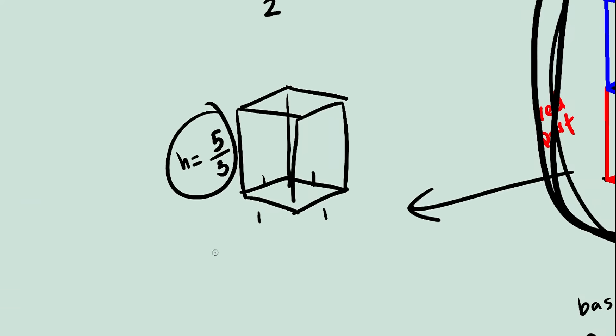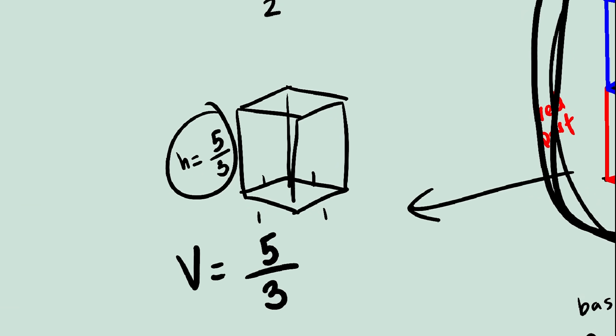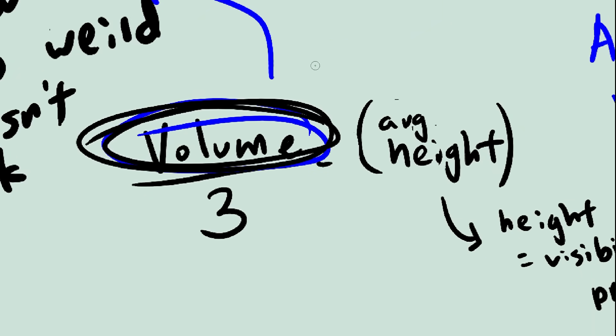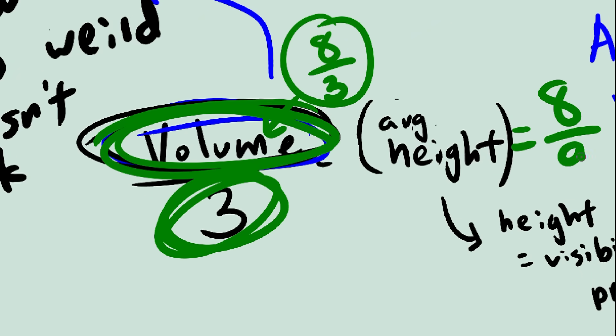Anyway, we can find the volume of the square prism pretty easily, it's just base times height. Adding this to the volume of the cube, we get 8 over 3, and now we go back to this formula. Average height is volume divided by base, so we get the answer to be 8 over 9.